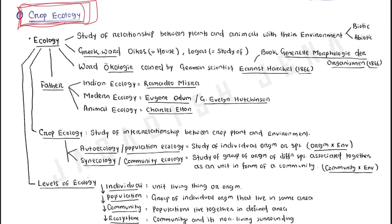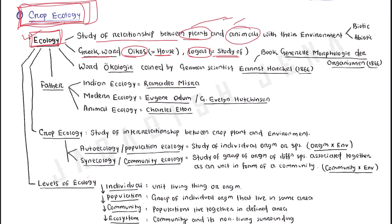So what is ecology? The term 'ecology' was derived from the Greek word 'oikos,' which means house, and 'logos' means to study. So ecology is the study of the relationship between plants, animals, and whatever organisms with their environment — whether that environment is biotic or abiotic.